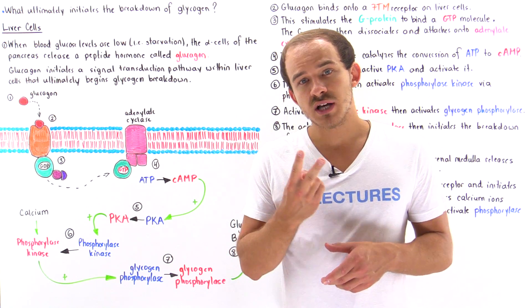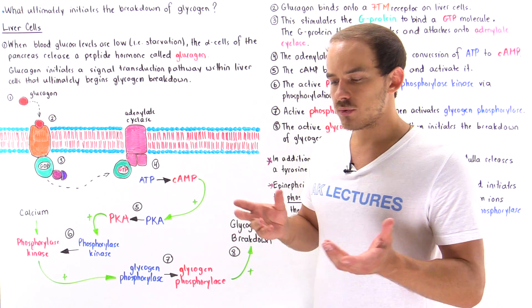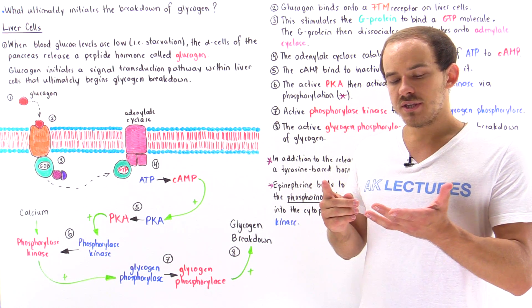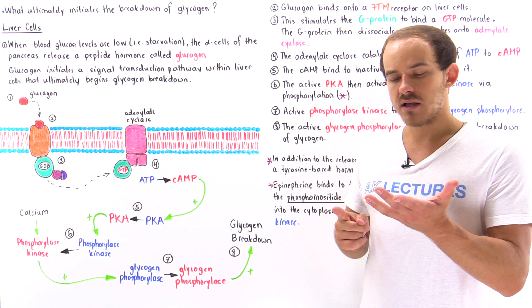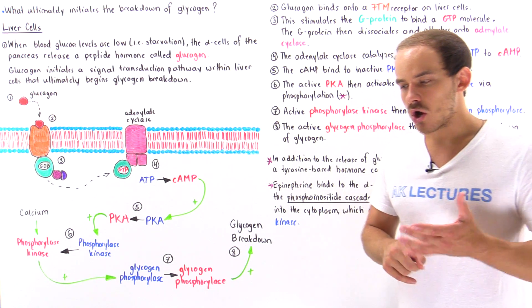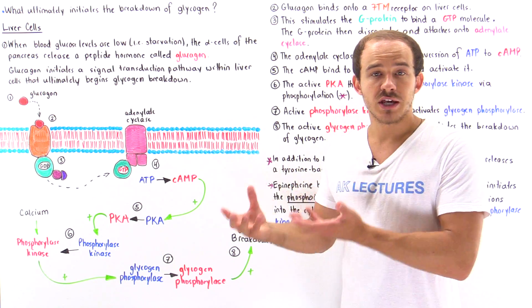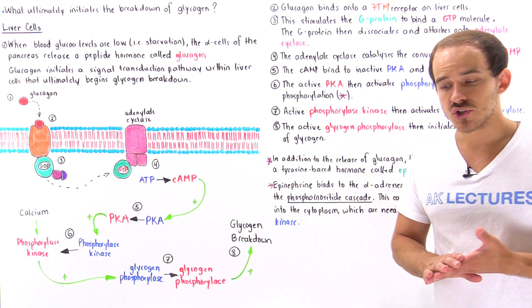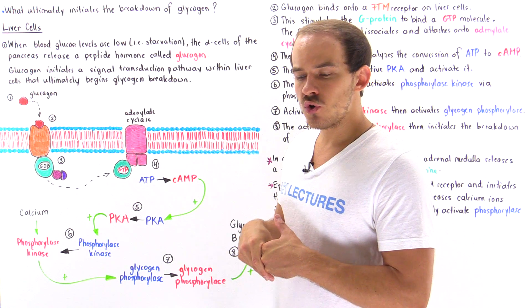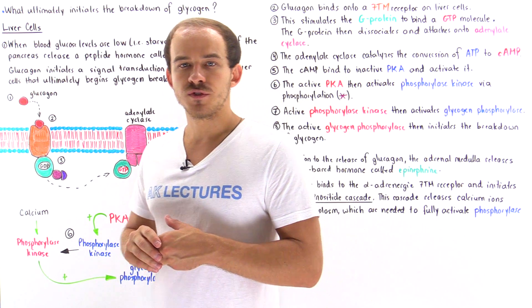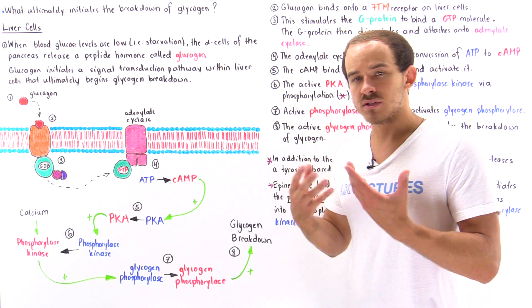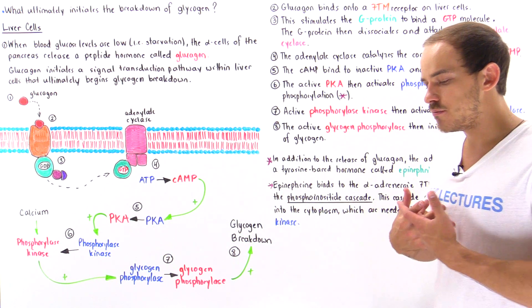Inside our body, we have two types of cells which are predominantly responsible for actually storing and breaking down glycogen. These cells are the skeletal muscle cells and the liver cells. Skeletal muscle cells are responsible for creating and generating voluntary motion, and when they break down glycogen into glucose, they use that glucose to produce the ATP molecules — the energy molecules needed to create voluntary motion.